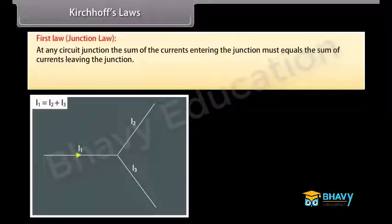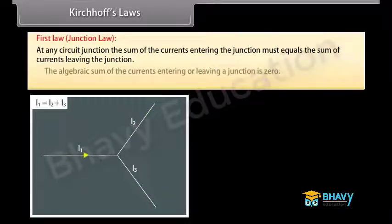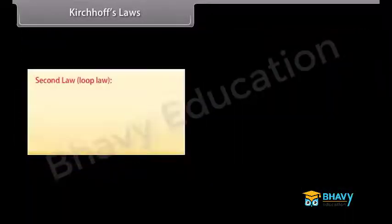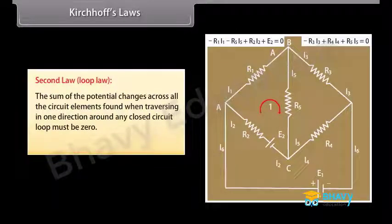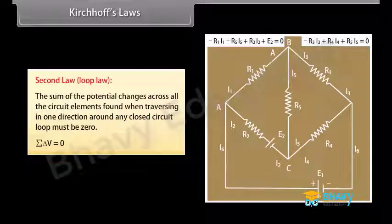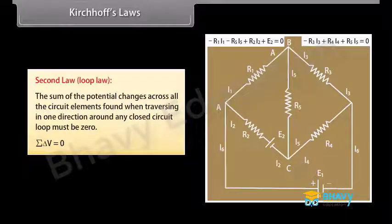Kirchhoff's Laws: The first law states that at any circuit junction, the sum of the currents entering the junction must equal the sum of the currents leaving the junction—the algebraic sum of currents entering or leaving a junction is zero: summation of I equals zero. The second law states that the sum of the potential changes across all circuit elements when traversing in one direction around any closed circuit loop must be zero: summation of delta V equals zero.